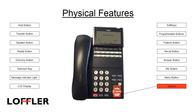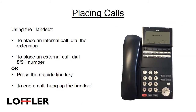The volume buttons allow you to adjust the volume control for your handset, speaker, ringtone, and brightness of your LCD display. To place a call using your handset, pick up your handset and dial the extension. To place an external call, dial the trunk access code 8 or 9, and then the number, or press a programmed button or outside line key. To end a call, hang up the handset.